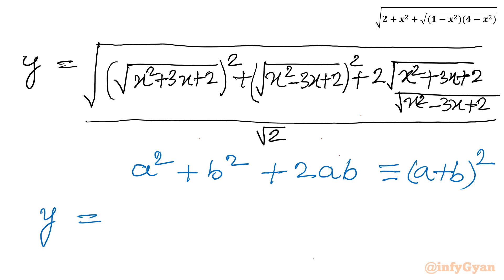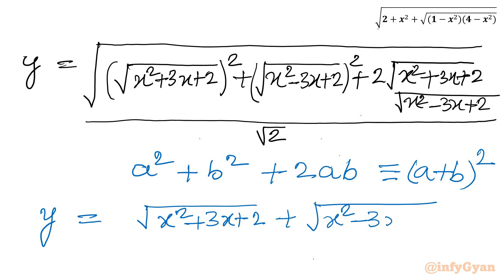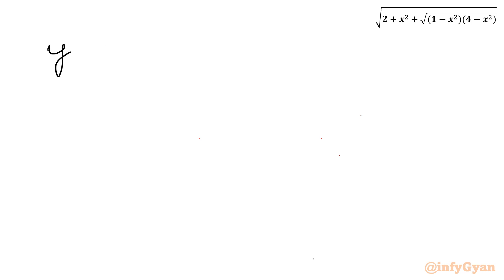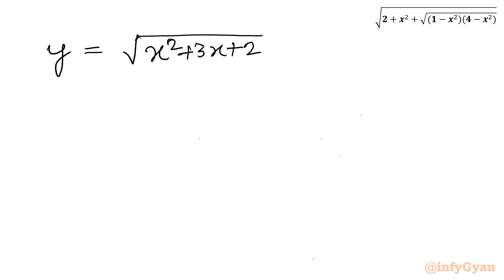So y equals square root of [√(x² + 3x + 2) + √(x² - 3x + 2)]² divided by √2. The square root and the square cancel each other. What is left in the numerator is simply √(x² + 3x + 2) + √(x² - 3x + 2), divided by √2. This is our answer.